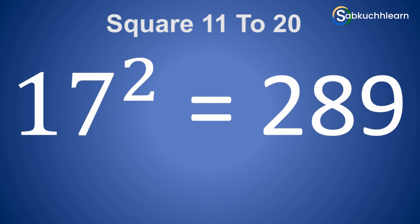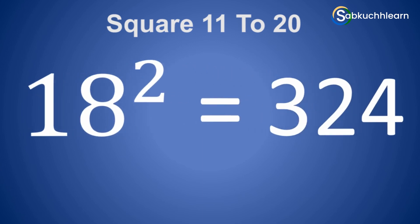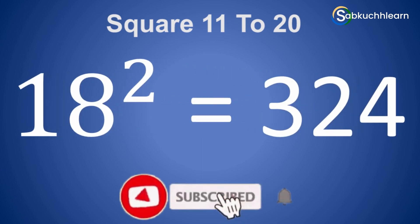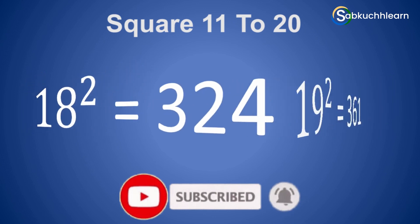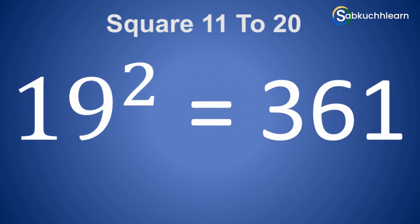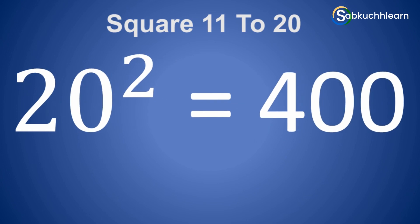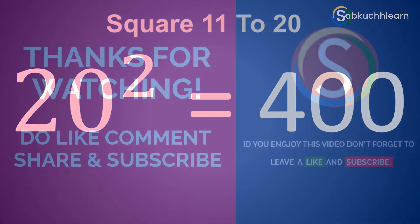17 square is 289. 18 square is 324. 19 square is 361. 20 square is 400.